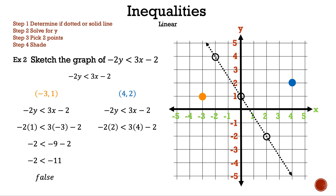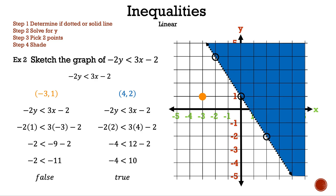Now let's substitute (4, 2) into the inequality: negative 2 times 2 is less than 3 times 4 minus 2. Negative 2 times 2 is negative 4, and 3 times 4 is 12, and 12 minus 2 is 10. So we have negative 4 is less than 10. That is true. Since (4, 2) is true, we need to shade that section of the graph to tell us that any point in that section makes the inequality true. Let's get rid of the points used to sketch the line. That is example 2.